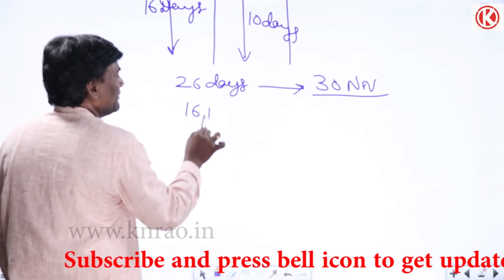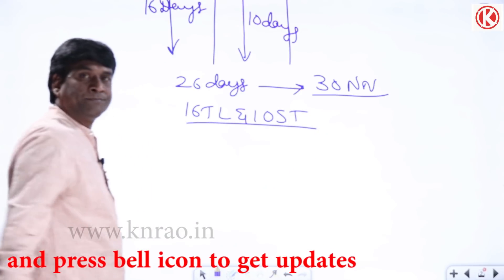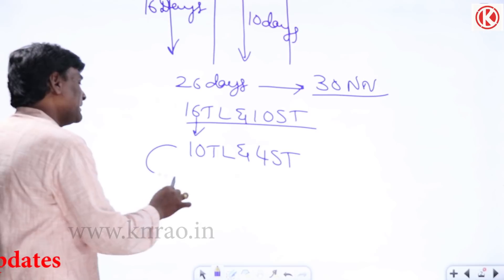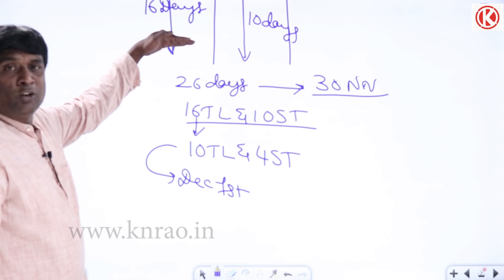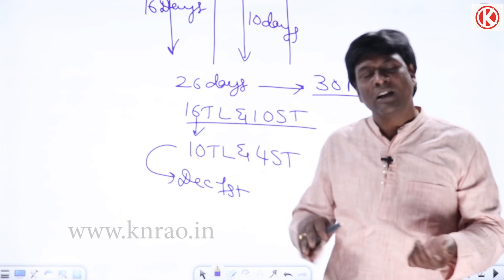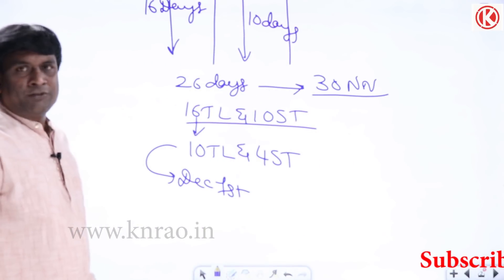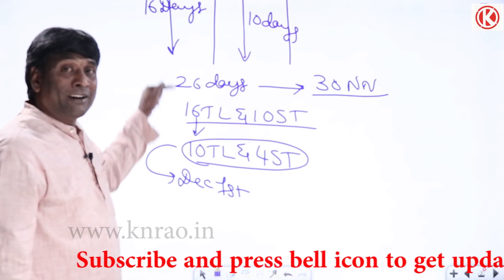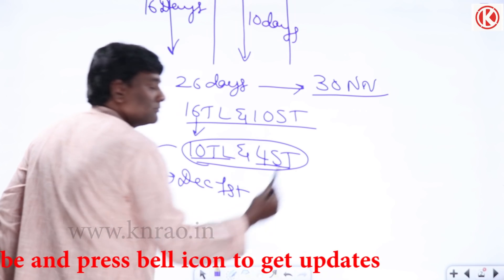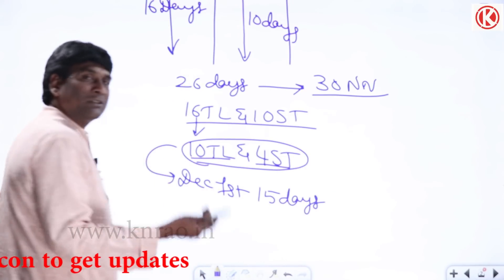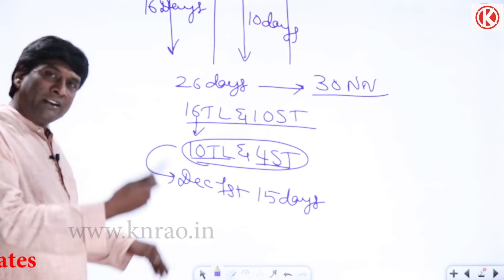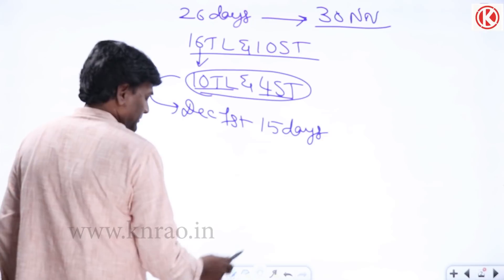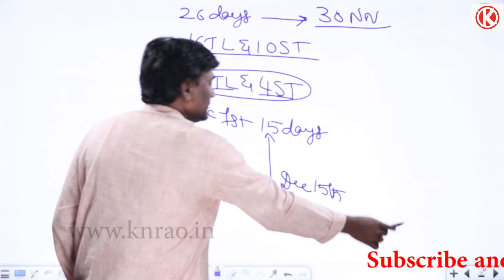By November 30th, you will have completed 16 topic-level tests and 10 subject-level tests. Remaining are 10 topic-level tests and 4 subject-level tests — start these from December 1st. You can plan the order: networks first, then controls, then digital, and so on. These 14 remaining tests will take roughly 15 days. Power systems topic-level tests you take from December 1st, and immediately after take the subject-level test. In this way, by December 15th, your syllabus will be done.